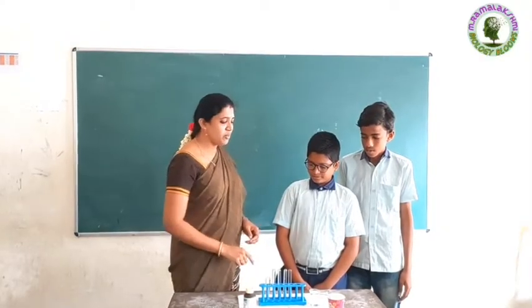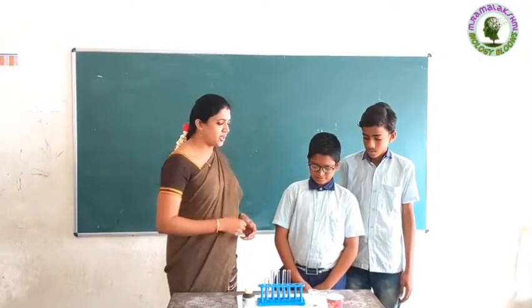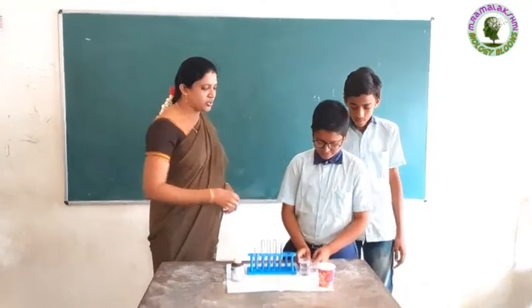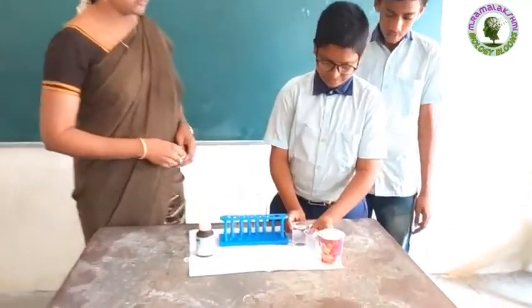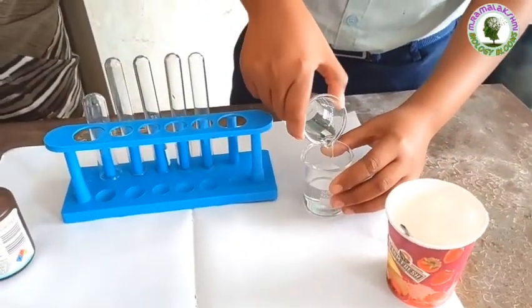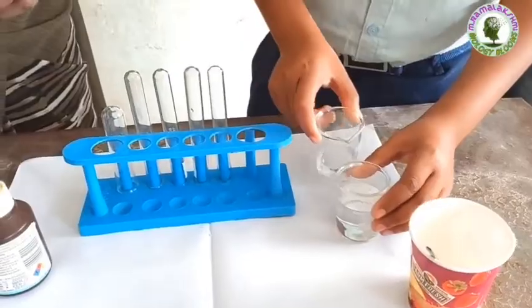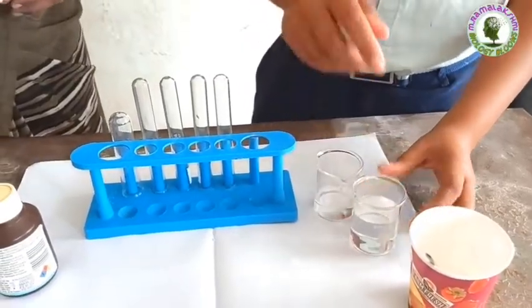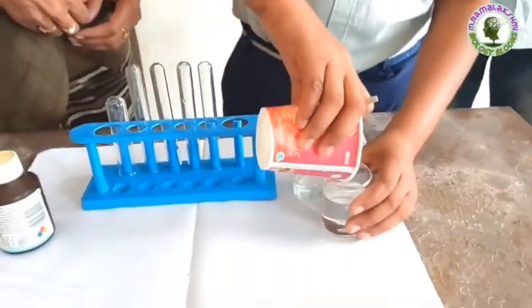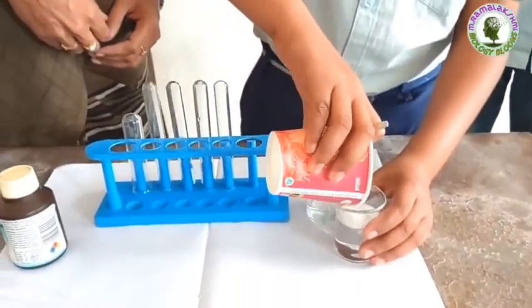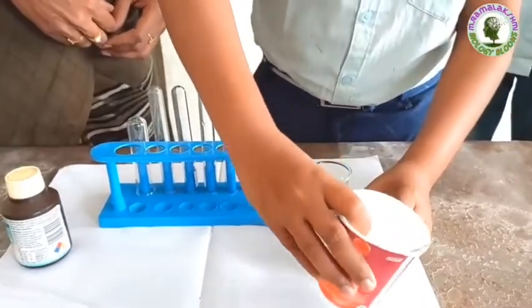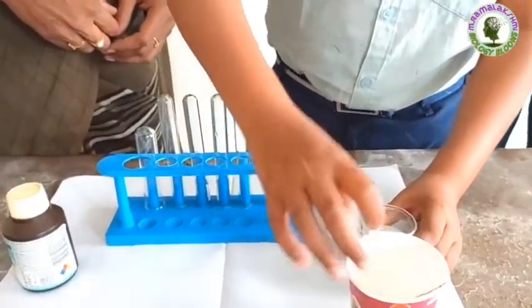So, Shyam, first make the starch solution. Take some water into the beaker, then add some rice flour into it. Stir it.